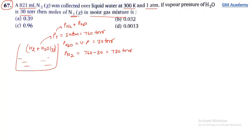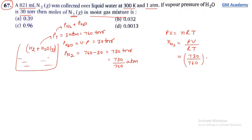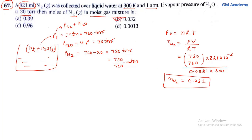Moles of N₂ = PV/RT. Pressure = 730/760 ATM, volume = 821 × 10⁻³ liters, R = 0.0821, T = 300 Kelvin. Solving: moles of N₂ = 0.032. Option B is the correct answer.